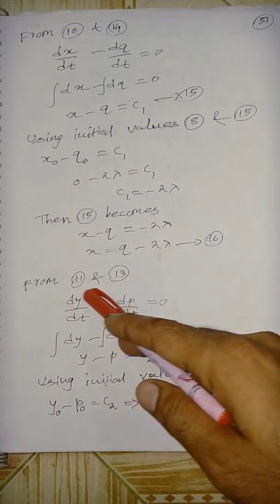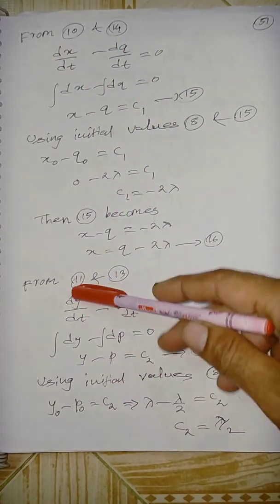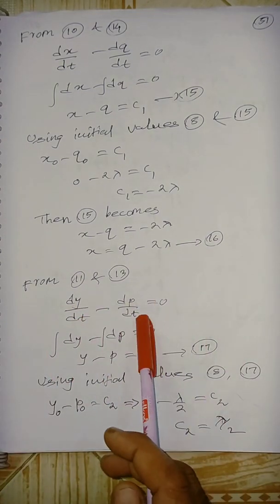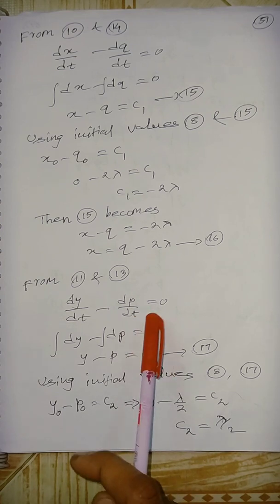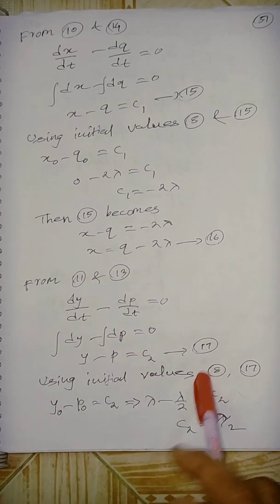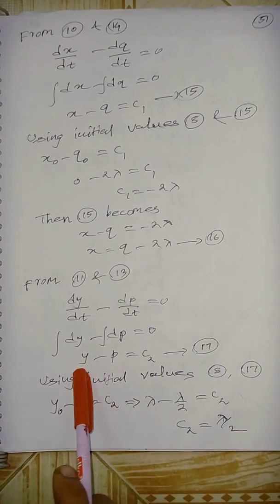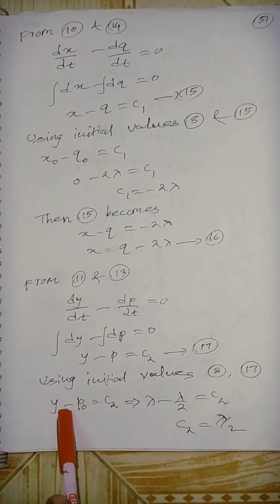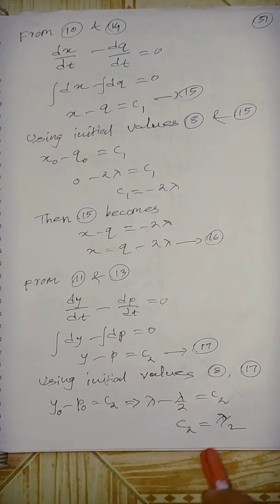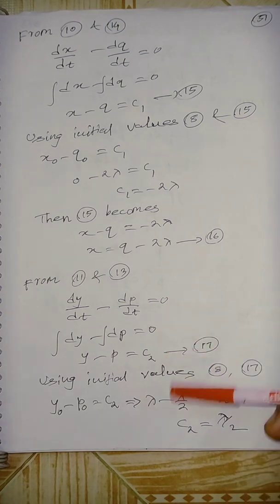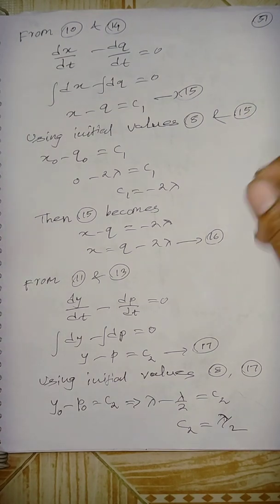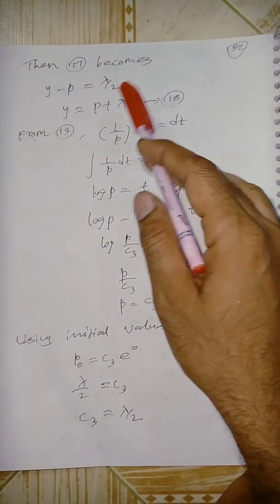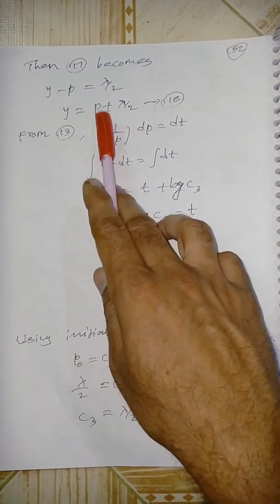From equations 11 and 13: dy/dt = p and dp/dt = p. Similarly, integrating: y − p = C2. Using initial values y0 = lambda and p0 = lambda/2, we get C2. So equation 17 becomes y − p = lambda/2, giving y = p + lambda/2.